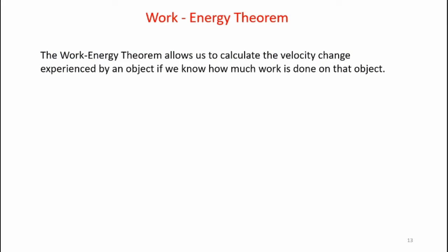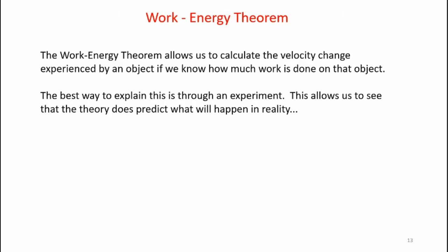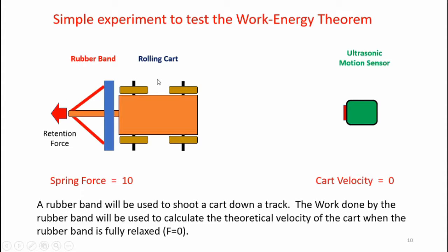The work energy theorem can allow us to calculate the velocity change experienced by an object if we know how much work is done on that object. But the best way to explain this is through an experiment — this allows us to see that the theory does predict what will happen in reality. Here's a simple animation of the experiment we'll be conducting. We have a rolling cart that's going to be propelled by a stretched rubber band. This rubber band and block system acts a lot like a slingshot. When the retention force is released, the cart will start moving to the right. This ultrasonic motion sensor will be used to measure the velocity, acceleration, and displacement of the cart as it moves.